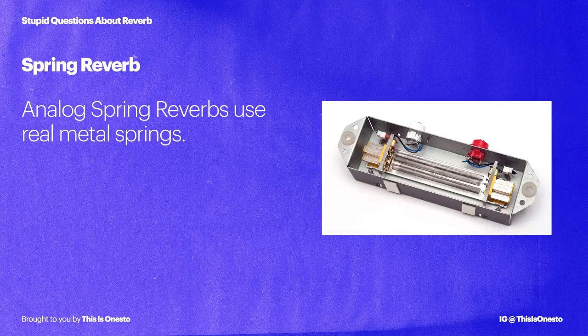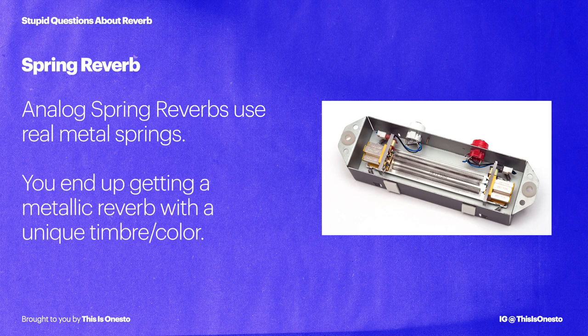Let's move on to spring reverbs. Spring reverbs are really interesting — it's an artificial way of creating reverberation. The way the real thing works is that you have an instrument signal going into one end of an actual metal spring, and at the other end you have an output transducer picking up the echo. The result is a reverb that sounds metallic and artificial, but it has a really unique color and timbre to it. Try placing spring reverbs on instruments where you want the reverb tail to have some color or that unique timbre — it's really good at emphasizing solos and leads.